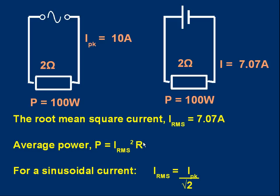It turns out that providing it's a sinusoidal-shaped current, the RMS value can easily be calculated: it's the peak current over the square root of 2. So if I divide my peak current of 10 amps by √2, I get 7.07 amps — that's the steady current which gives the same power output as this alternating current.